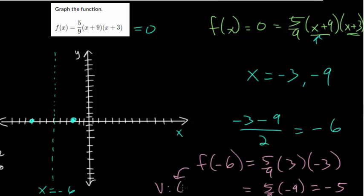has an x value of -6 and a y value of -5. So let's graph that point. So this is the x value of -6, so somewhere around there.